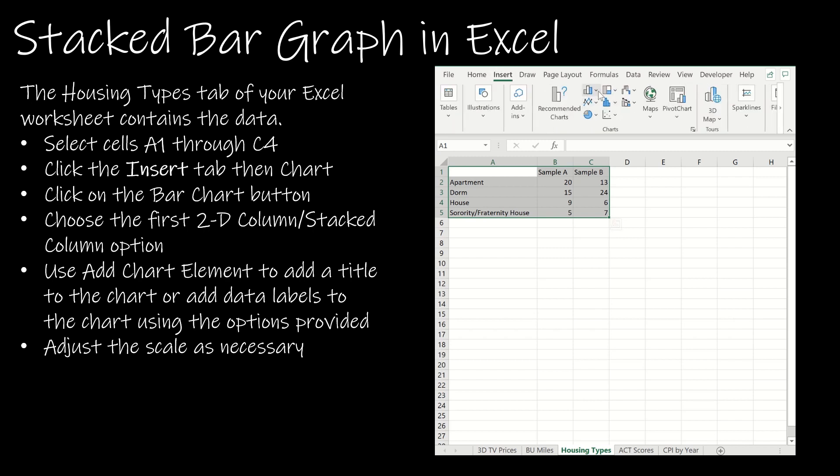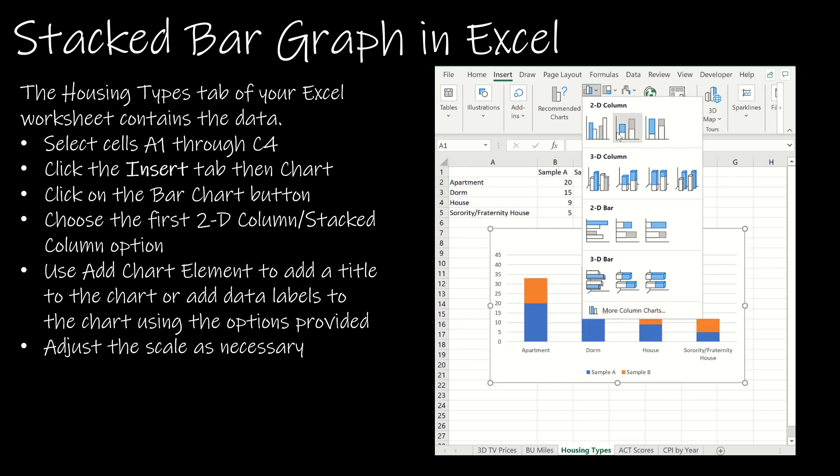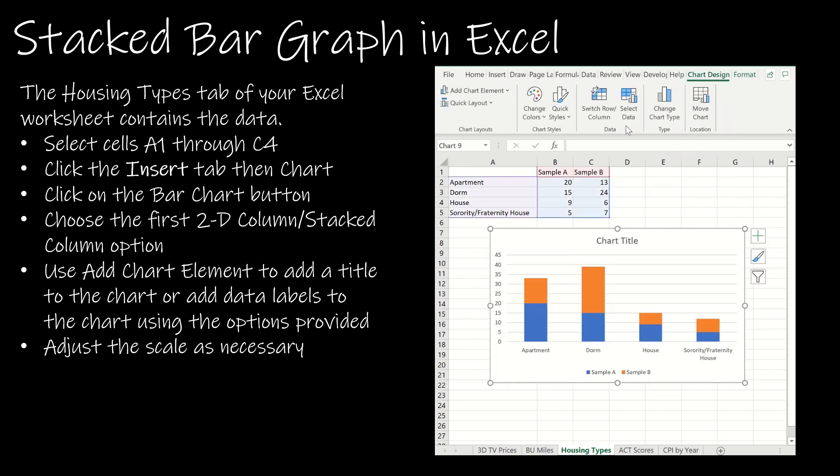I select the same data, go to insert, and choose the stacked column instead of clustered. There's another stacked option that shows as a percentage of the whole—a great way to compare percentages based on options. We'll create the one that gives whole values, not percentages. Everything else is the same: choose axis titles, change the title, change the scale if necessary, and give each axis an appropriate title.